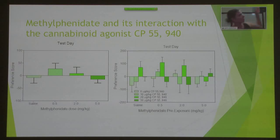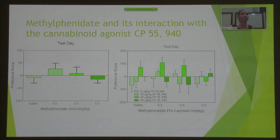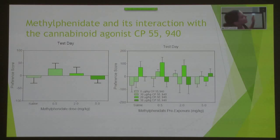Looking at the two graphs: the left graph shows methylphenidate collapsed across all cannabinoid dosages, and we see no significant interaction with the preference score — no dose of methylphenidate enhanced preference for the cannabinoid-paired chamber. The right graph examines whether methylphenidate interacts with a specific dose of the cannabinoid agonist to increase preference. With our preliminary data, we do not see any significant trending that pre-exposure to methylphenidate is causing an increase in cannabinoid preference in adulthood.